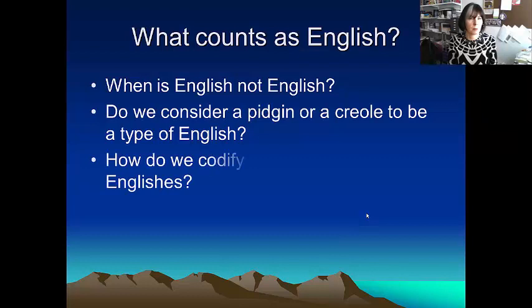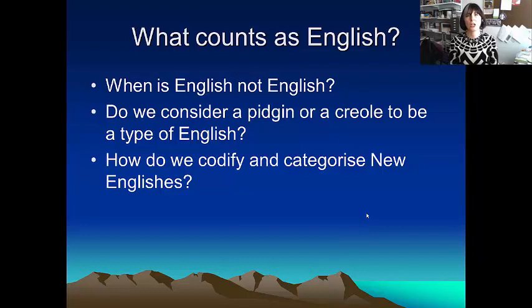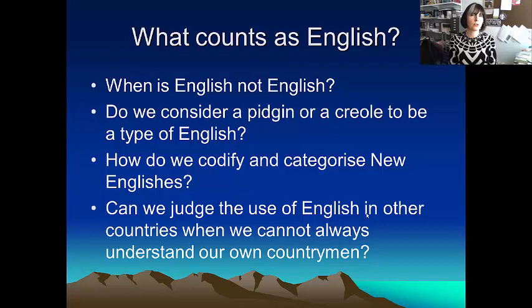How do we codify and categorise new Englishes? How do we decide when something is a bona fide variety of English? So if you've got British English, American English — if these are accepted as varieties, what about Indian English, Singapore English, Hong Kong English? Can we judge the use of English in other countries when we can't always understand our own countrymen? You must have spoken to somebody from somewhere in the UK where you couldn't understand them.